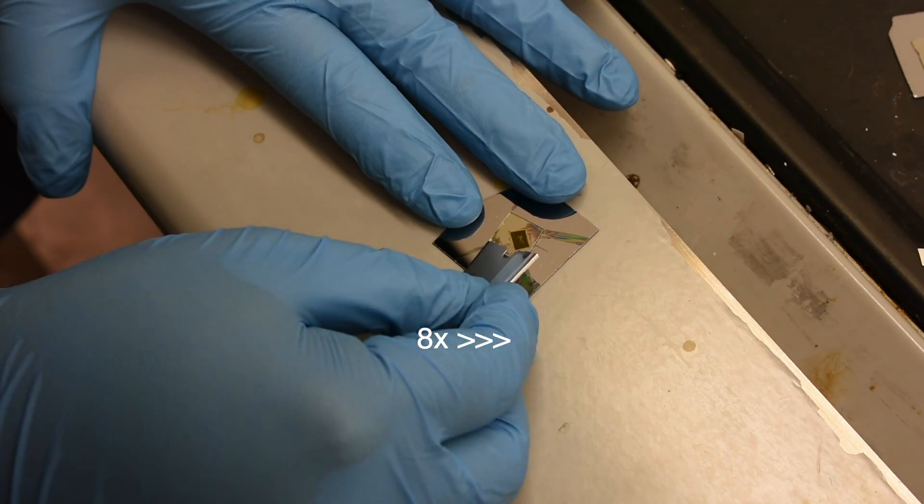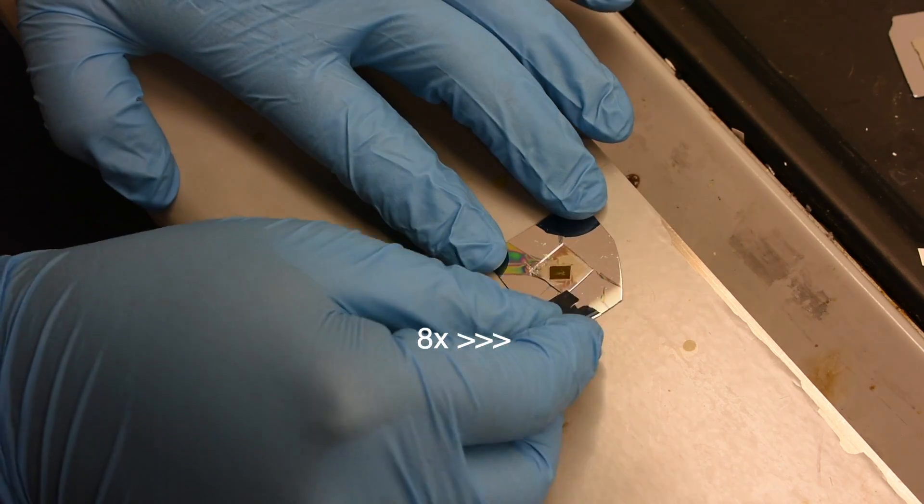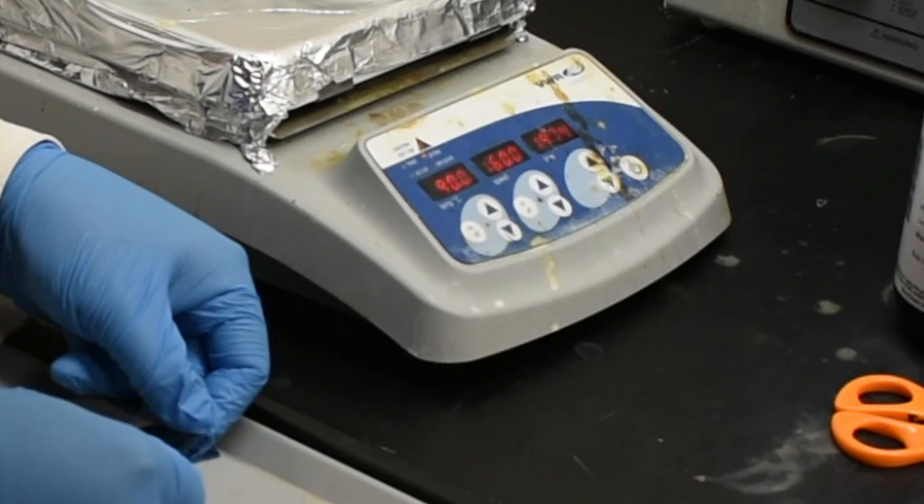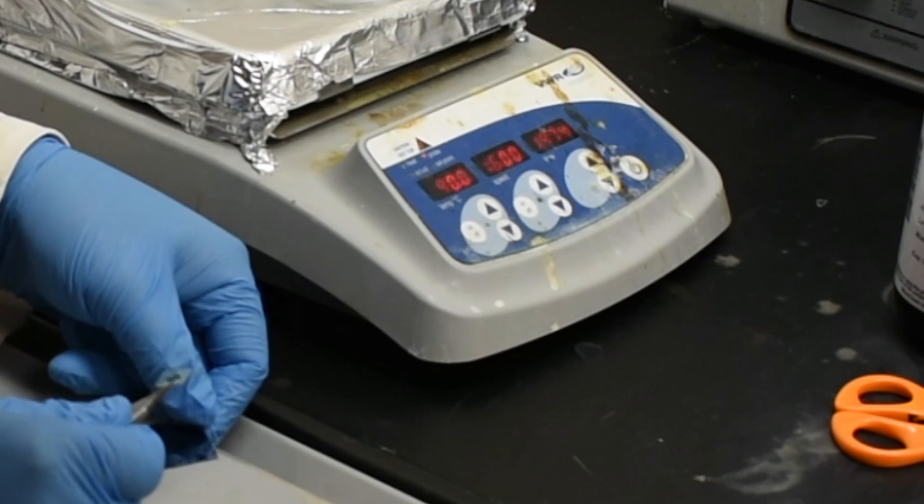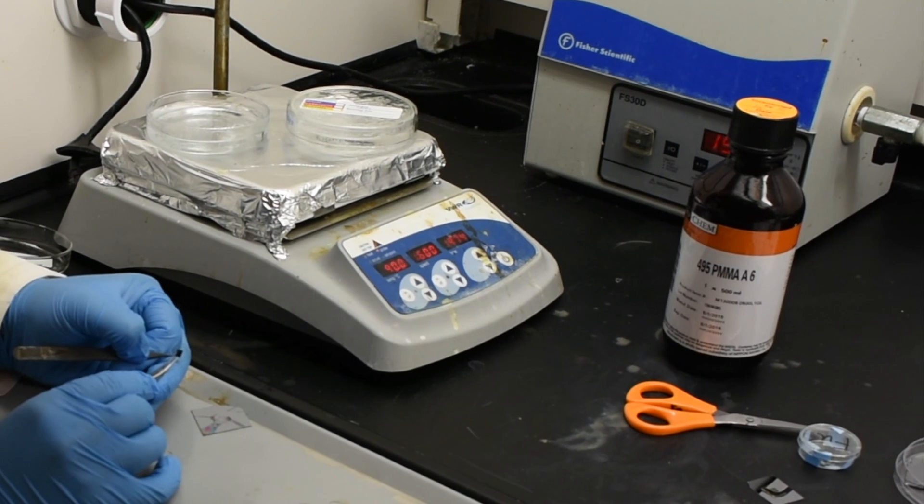The next day, we use a razor blade to shave PMMA from the perimeter of our sample. Next, we remove the carrier silicon wafer and the double-sided tape from our PMMA-coated sample.